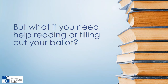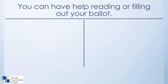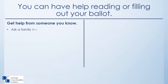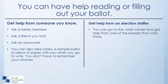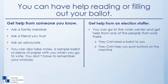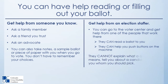If you need help reading or filling out your ballot, you can get that help. You can get help from someone you know — ask a family member, a friend you trust, or an advocate. You can also take notes, a sample ballot, or a piece of paper with your choices when you go to vote. You don't have to remember your choices. You can go to the voter center and get help from one of the people that work there. They can read a ballot to you and help you push buttons on the machine. However, they cannot explain what a question means, tell you about a candidate, or tell you whom you should pick.